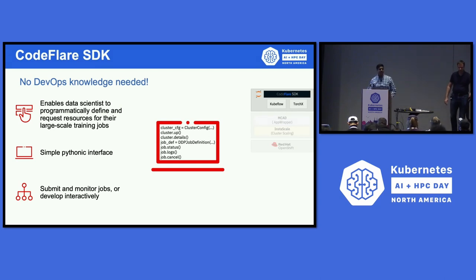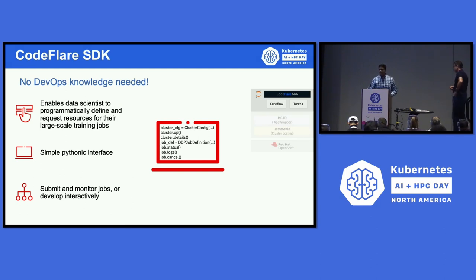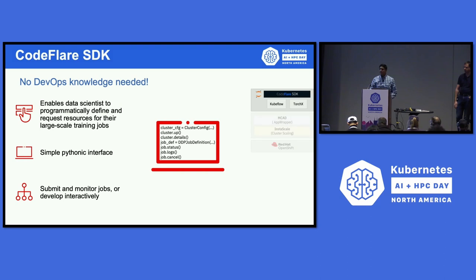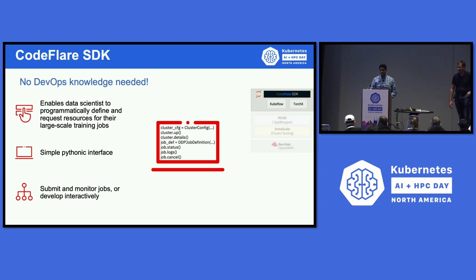We are now going to learn about the different ingredients of the stack and then see the whole recipe. The first ingredient is the CodeFlare SDK — a simple Pythonic interface typically catered to researchers, ML engineers, and data scientists for interfacing with the stack using Jupyter notebooks or CLI. Users can create clusters and submit jobs using the CodeFlare SDK. A key API is the cluster config object, which provides the ability to bring up the cluster, view its details, interact with spawned clusters by submitting jobs, viewing statuses and logs, and performing teardown operations.